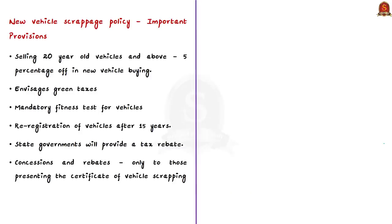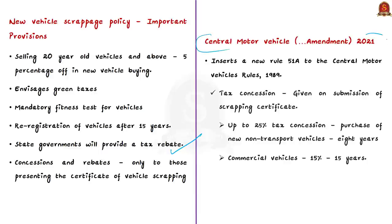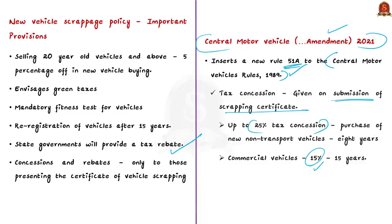Additionally, the government will provide a tax rebate on motor vehicle tax. In line with this, the Central Motor Vehicles Amendment Rules of 2021 were announced, aiming to insert a new Rule 51A into the Central Motor Vehicles Rules of 1989 for concession in motor vehicle tax. The Centre has proposed up to 25% tax concession on purchase of new personal vehicles, and 15% tax concession for commercial vehicles, on submission of a scrappage certificate. In the case of personal vehicles, the tax concession will be available up to 8 years, while for commercial vehicles it will be for 15 years, calculated from the date of first registration.